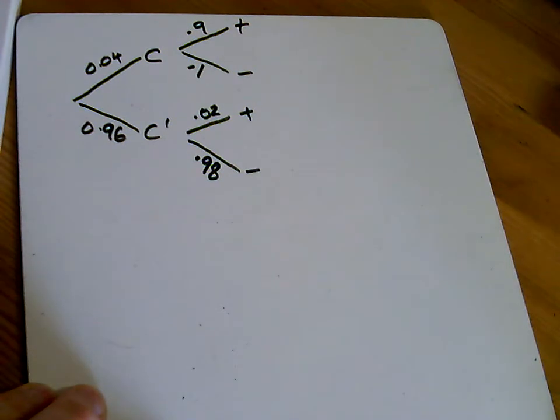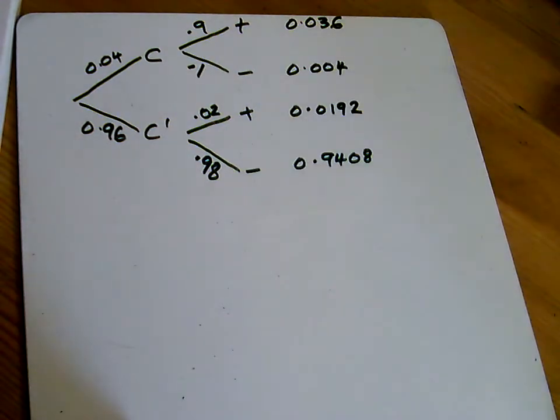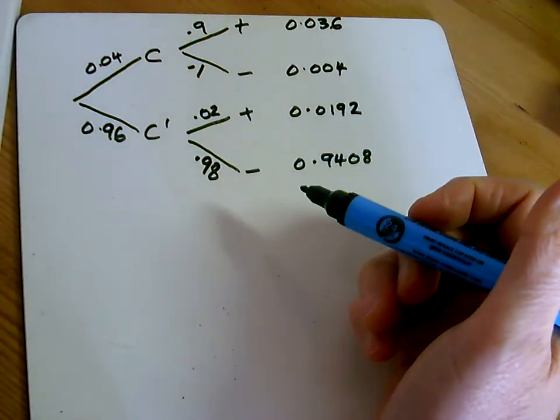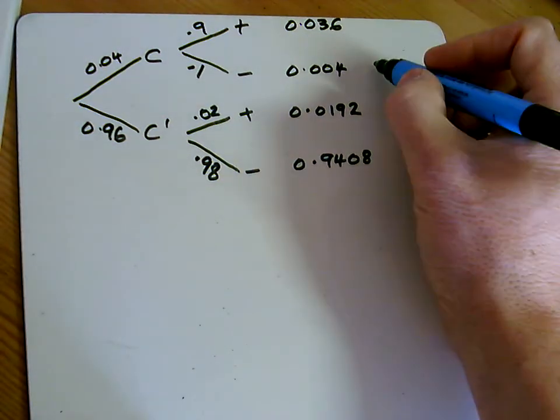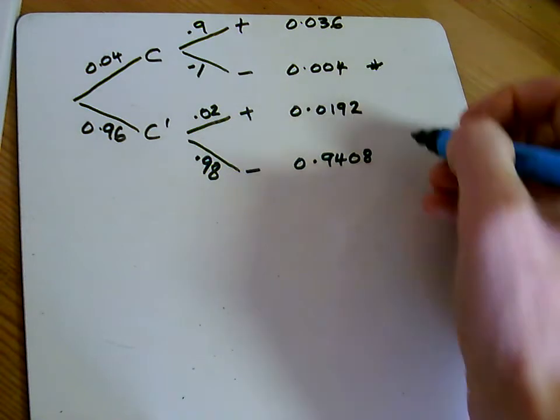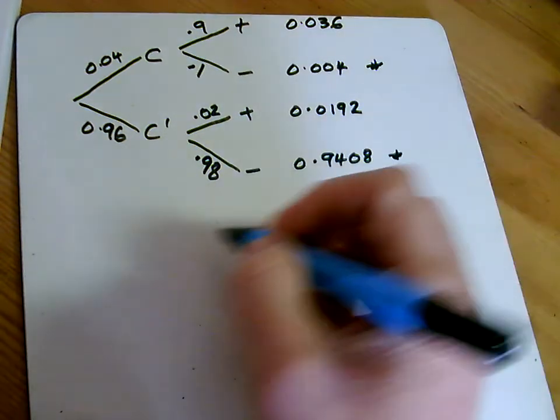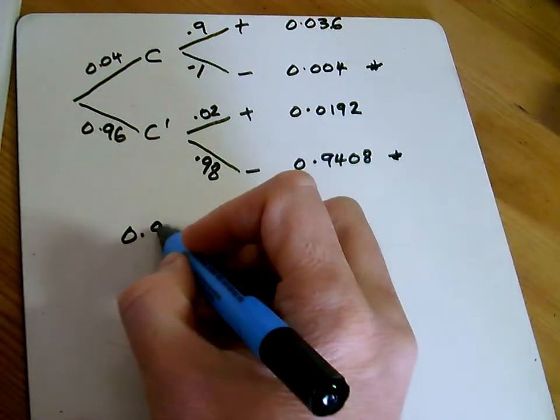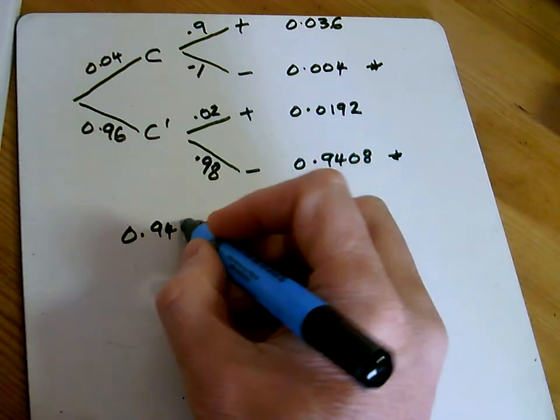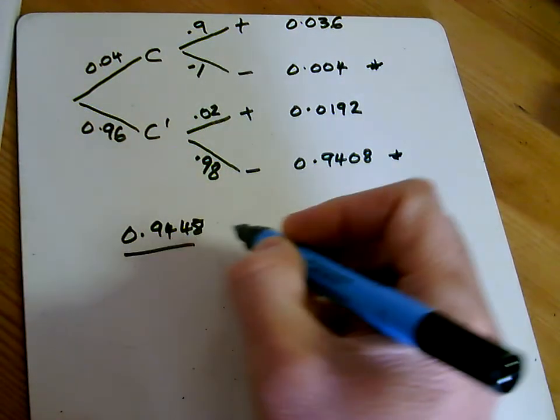Let's work out the probabilities on the end by multiplying along. So there's the probabilities on the end. Find the probability that the test is negative. The test is negative is this one and this one added together. So we've got 0.9448 is the probability of the test being negative.